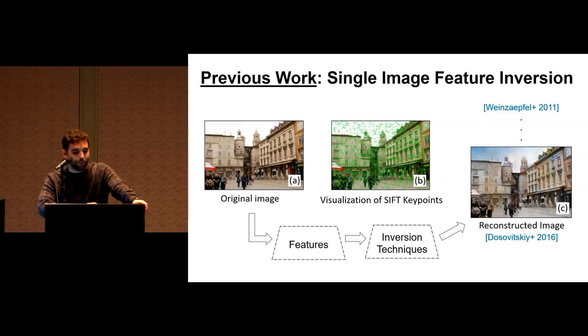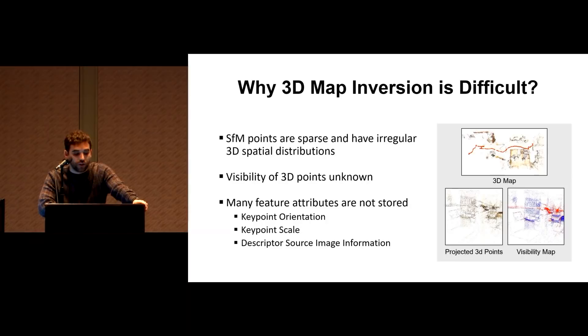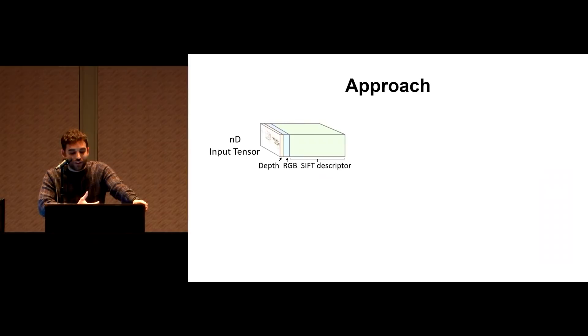Well, it mainly comes down to having less information to work with. So firstly, SFM points are highly sparse and have irregular 3D spatial distributions. Second, the visibility of the 3D points is unknown. Lastly, many feature attributes are not stored. This includes keypoint orientation and scale and descriptor source image information. So after projecting the 3D points, this leaves us with a sparse n-dimensional tensor containing some combination of depth, RGB, and SIFT. We use this tensor as the input to our model, which consists of a cascade of three neural networks.